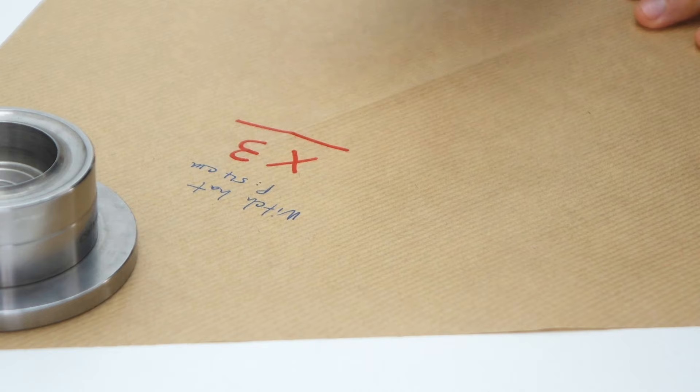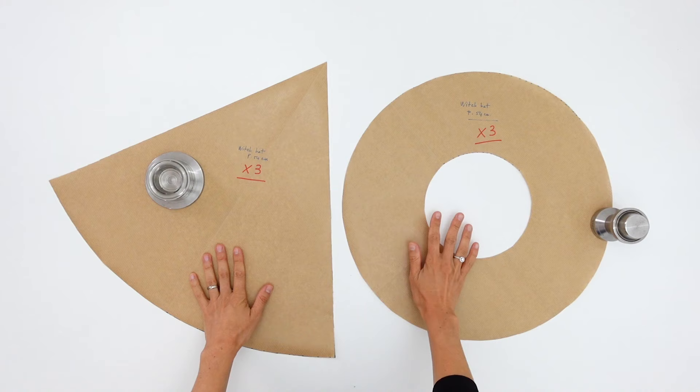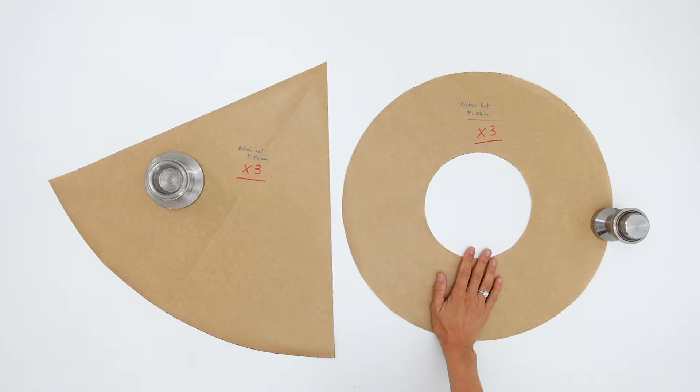Voila, the pattern is ready. We need to cut each piece three times. Twice in the main fabric and once in a fusible or a firm interfacing. And we shall start with the brim.